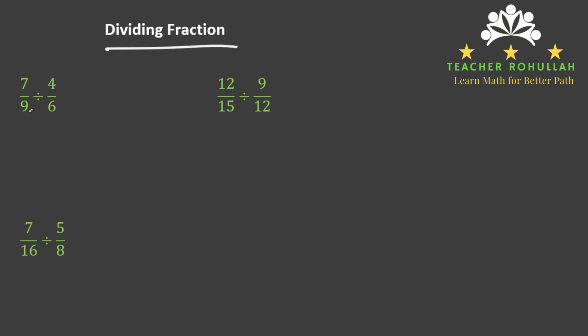The first one is 7/9 divided by 4/6. The second one is 12/15 divided by 9/12. And the third one is 7/16 divided by 5/8.